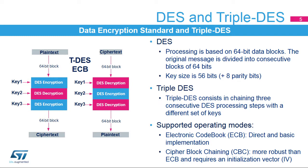ECB is a direct implementation, block after block, with no dependencies between them. It can be used safely with small messages. For larger messages, CBC is preferred, since it efficiently randomizes the encrypted output. Triple DES, shown in the diagram, consists in chaining three consecutive DES operations for the same block of 64 bits, with either the same key or with three different keys. As with DES, block chaining can follow either ECB or CBC.